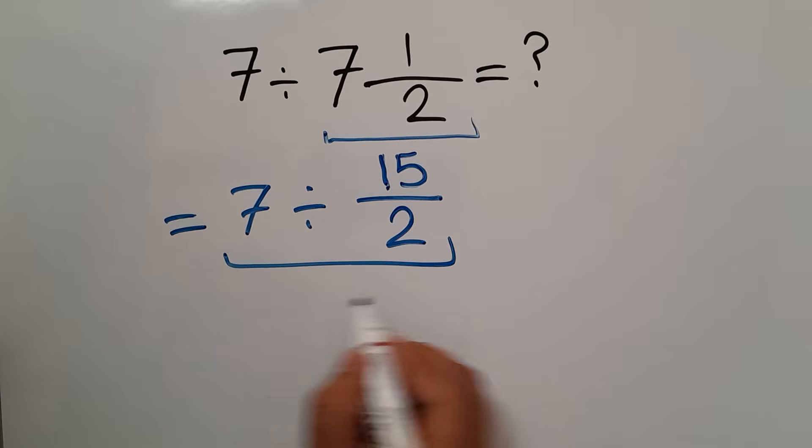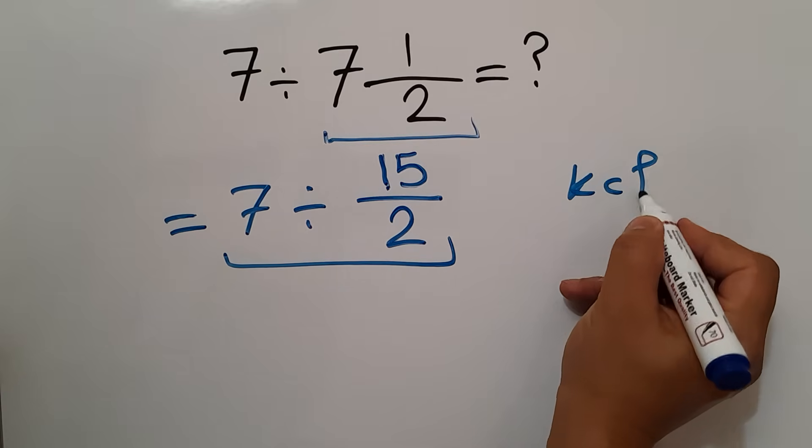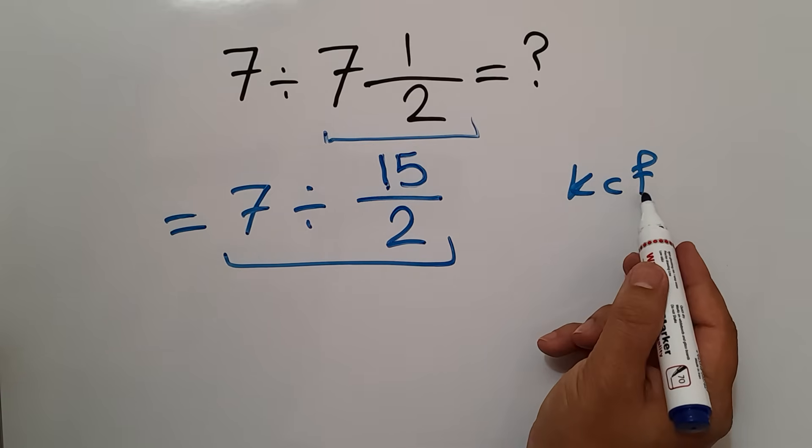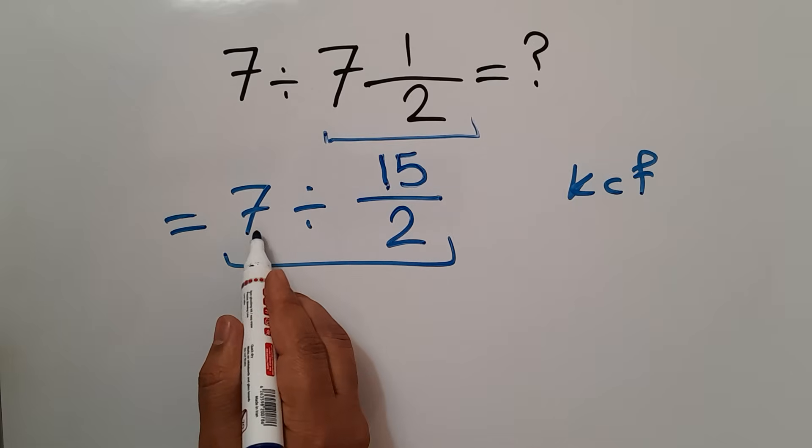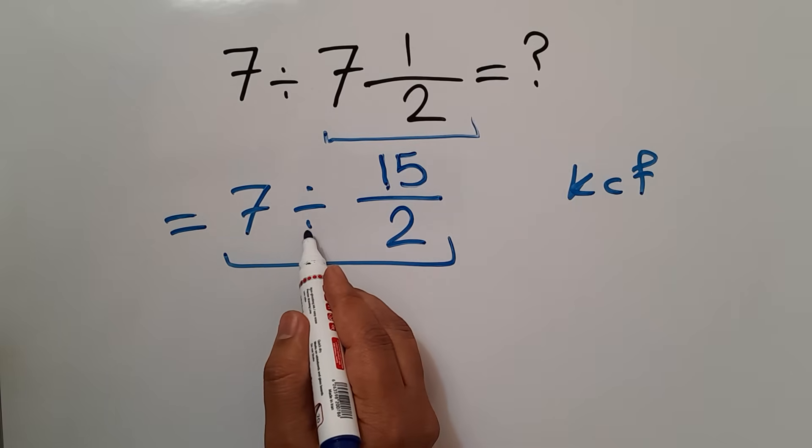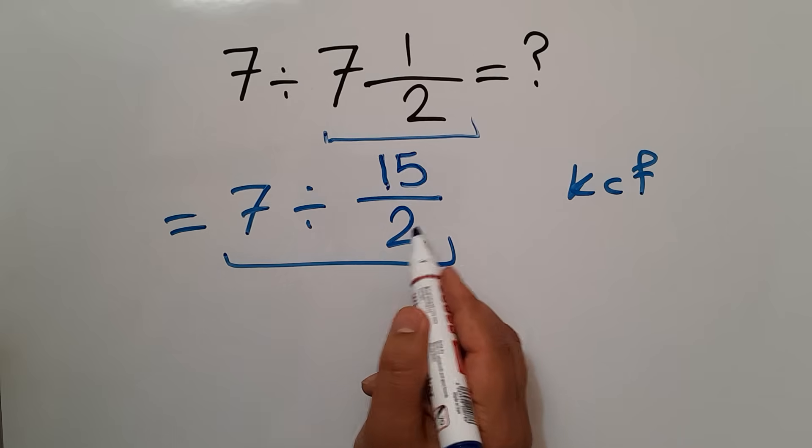Now, according to the KCF rule, K stands for keep, C stands for change, and F stands for flip. Keep the first fraction, change division to multiplication, and flip the second fraction.